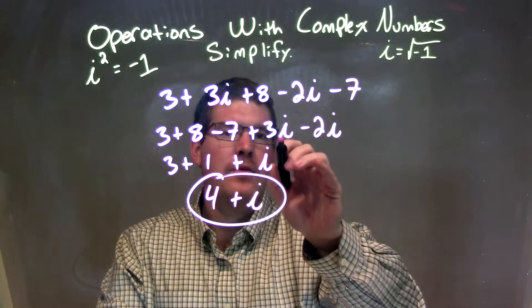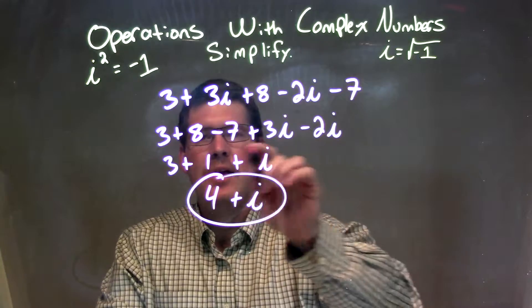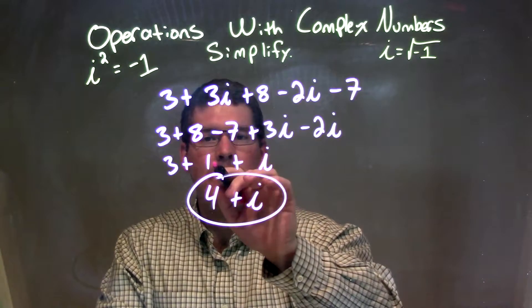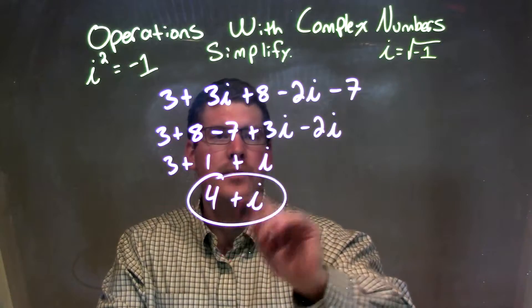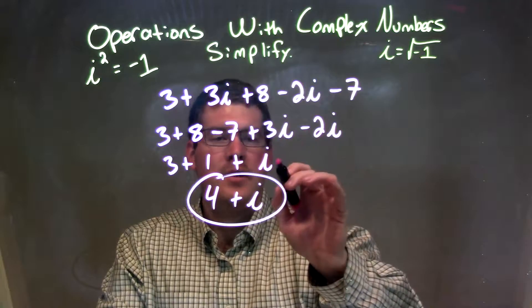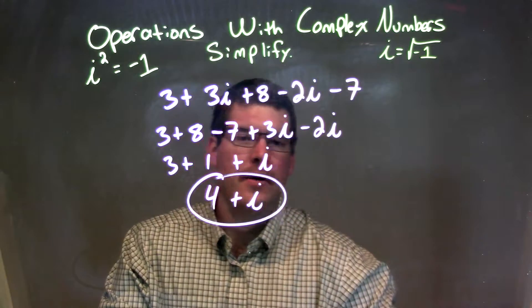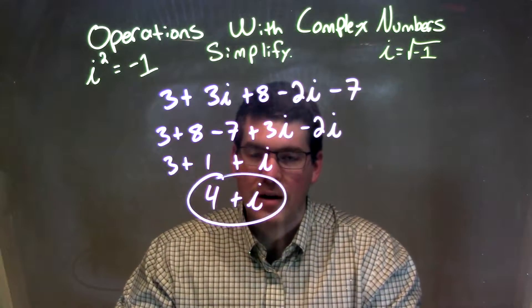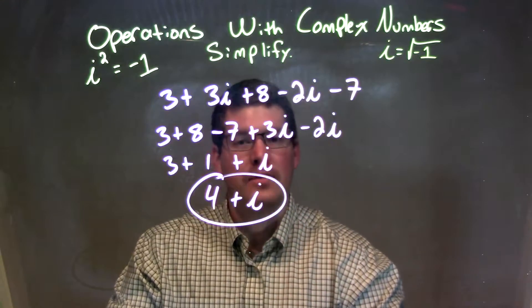and our imaginary ones, 3i minus 2i. And then combined, 8 minus 7 would be 1, and eventually 1 plus 3 would be 4. 3i minus 2i came out to be positive 1i, to again get us to our final answer of 4 plus i.